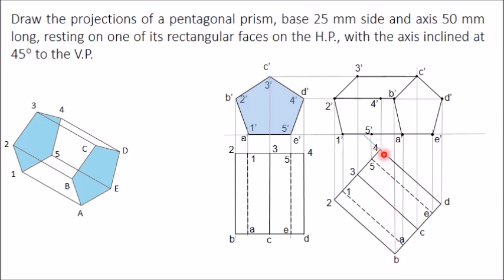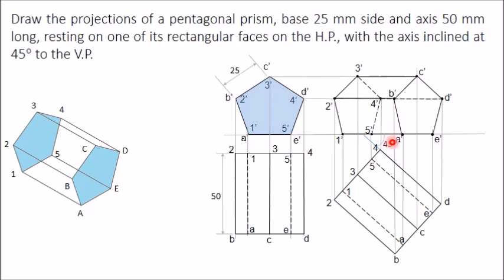When looking from the front, point 4 is invisible. Therefore all lines joining point 4 must be drawn as dashed lines. The three lines from point 4 are: 4-to-3, 4-to-5, and 4-to-d. Draw all three as dashed lines. The front view and top view of the required pentagonal prism are now complete. Mark all dimensions — the 45-degree angle, the side length, and the axis length — to complete the projection.